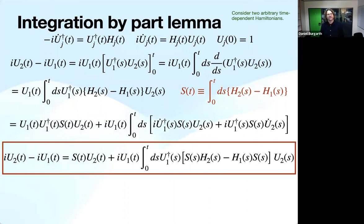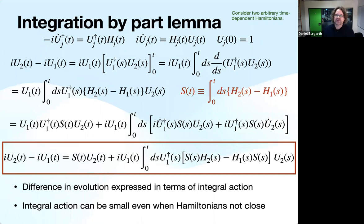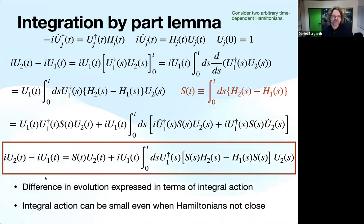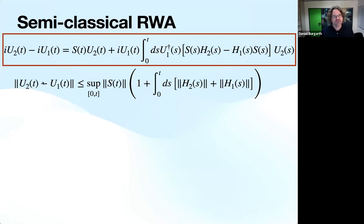The interesting thing is that even when two Hamiltonians are not close, the integral action can be small — and this is exactly what happens in the rotating wave approximation because terms average away. The origin of the average is not that measurement is slow, but is simply explained by this integration by parts. To apply this to the semi-classical RWA, we take norms on both sides. The norm of a unitary is one, so we get just S(t). We can bring the norm inside the integral, the unitaries disappear, and bounding S(t) by its supremum gives a simple formula.